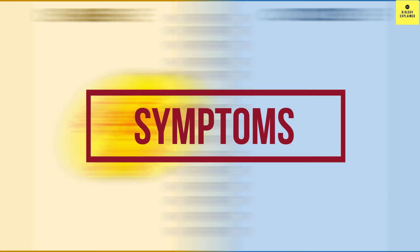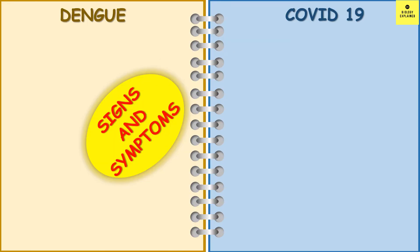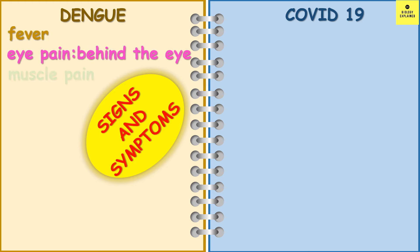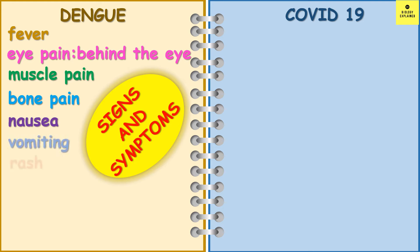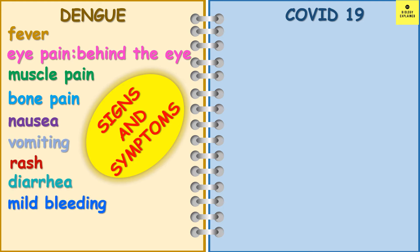Let's now see the signs and symptoms of dengue and COVID-19. In case of dengue, the most common symptom is fever, which can be followed by eye pain, muscle pain, bone pain, nausea, vomiting, rash, diarrhea, or mild bleeding. In case of COVID-19, there are a lot of symptoms like fever and chills.